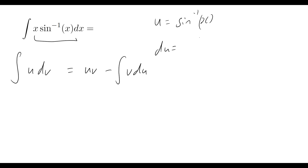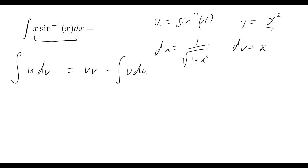So du is going to be equal to one over the square root of one minus x squared. If you're not sure how I've gotten from arc sine of x to that derivative, I have a video covering the inverse tangent function — I'll leave that in the description. That means dv is going to be equal to x dx, and therefore v is equal to x squared over two.